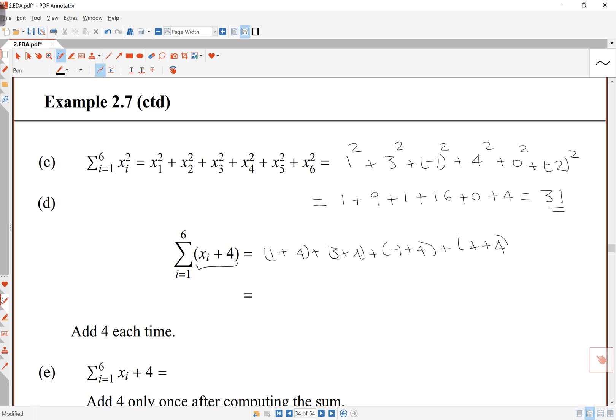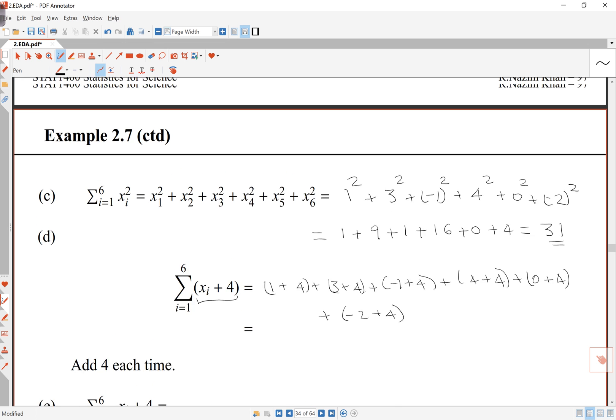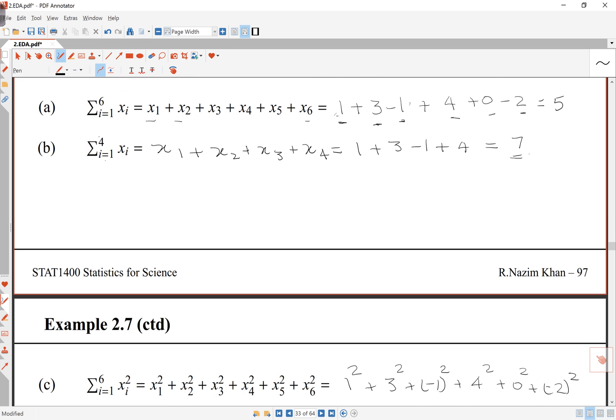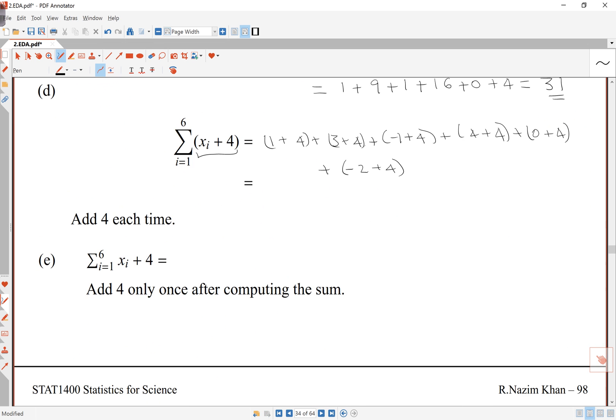0 plus 4, and finally negative 2 plus 4. So here, if I perform the sum, what I'm going to get is 29.